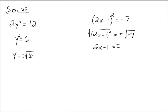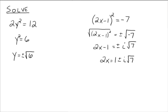Now what about the square root of negative 7? That's going to be an imaginary number. The square root of 7 is just the square root of 7, but the square root of negative 1 is i. So the square root of negative 7 becomes i times the square root of 7. Now we isolate x: add 1 to both sides, giving 2x equals 1 plus or minus i radical 7. Then divide both sides by 2, giving x equals 1 plus or minus i radical 7, all divided by 2.